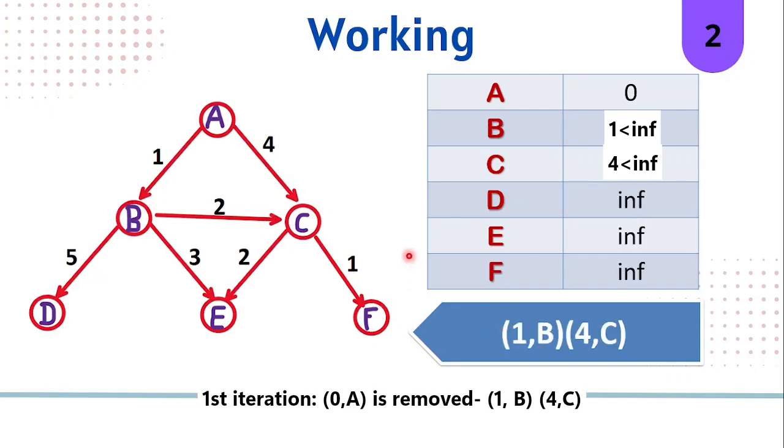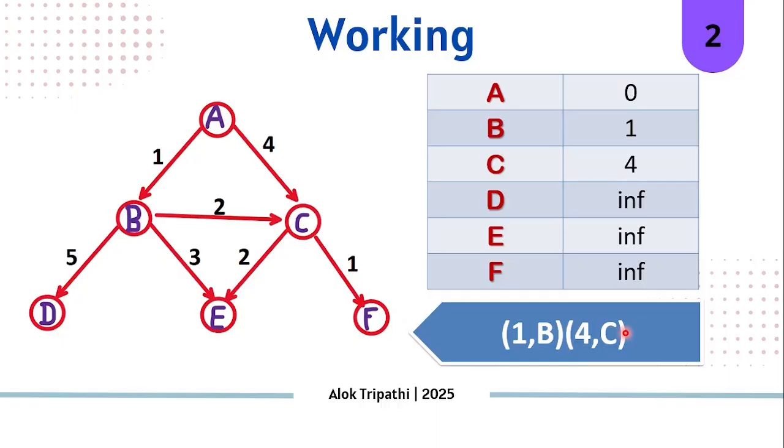After taking out 0A, we'll be exploring it and we'll get 1B and 4C. Now for 1B, we'll check whether 1 is less than infinity. Yes, it is. So the value of B will be updated to 1 and 1B is added to the priority queue. Similarly, for 4C, we'll update the value in the table to 4 and 4C will be added to the priority queue.